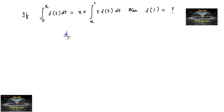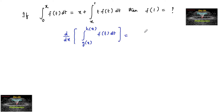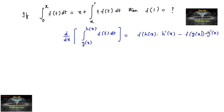We use the rule: d/dx of integral g(x) to h(x) of f(t) dt equals f(h(x))·h'(x) minus f(g(x))·g'(x). So let's apply this rule here. Take d/dx of integral 0 to x of f(t) dt.